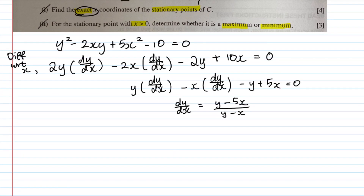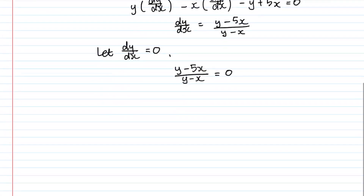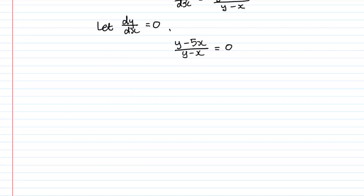Bringing all the dy/dx terms to one side: dy/dx = (y − 5x)/(y − x). Now, since we're finding stationary points, we set dy/dx = 0. So (y − 5x)/(y − x) = 0, which means y − 5x = 0, therefore y = 5x. This is our key relationship.